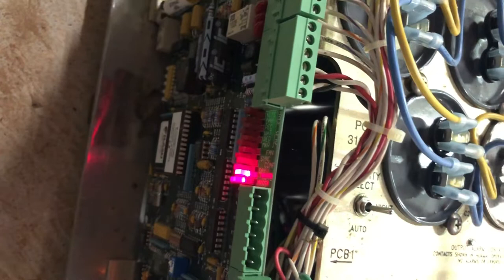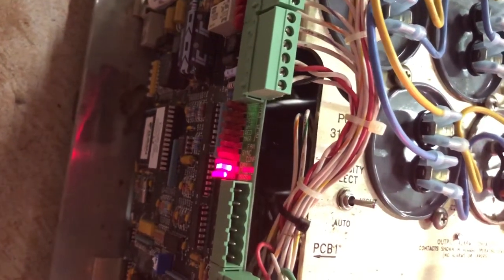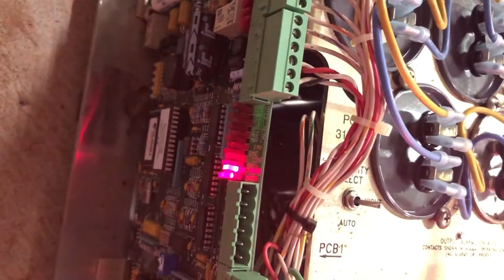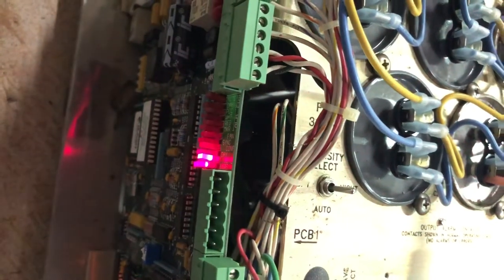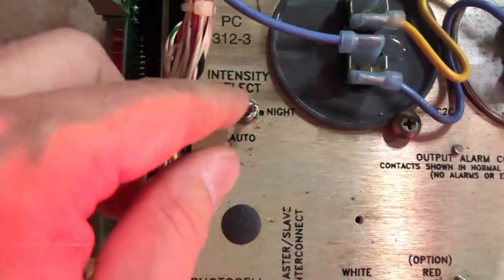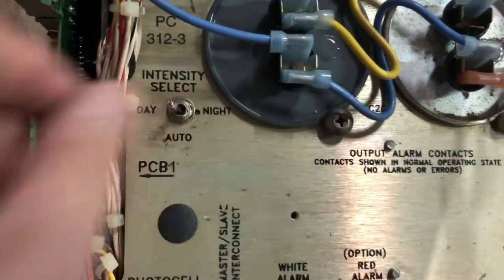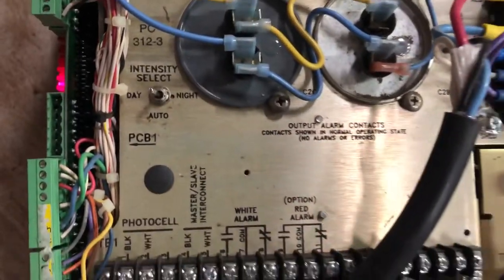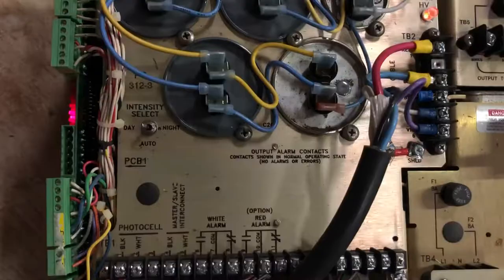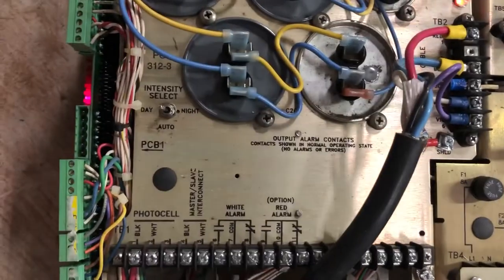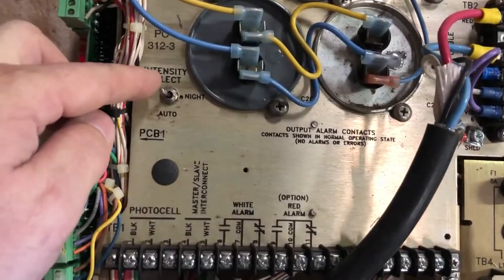And on the side here, these are your status LEDs. It will show you things like your sync, day or night mode, and any alarms that you might have. Here's your intensity select switch - changes between night and day and auto. Auto is usually for photocell or master-slave interconnect operation.